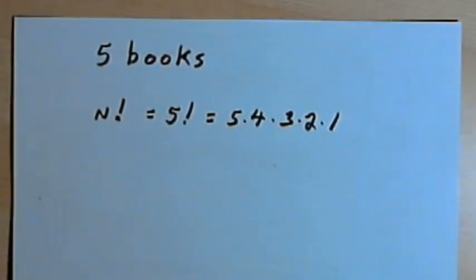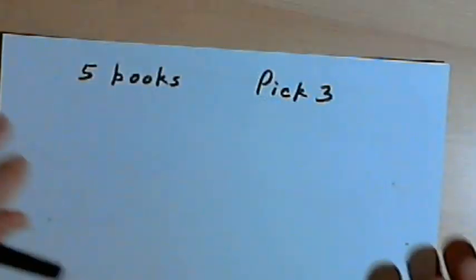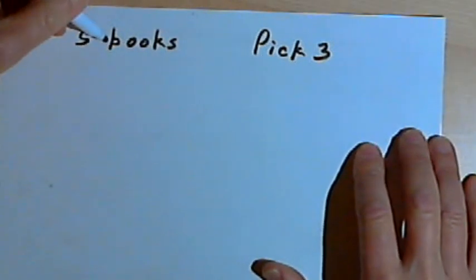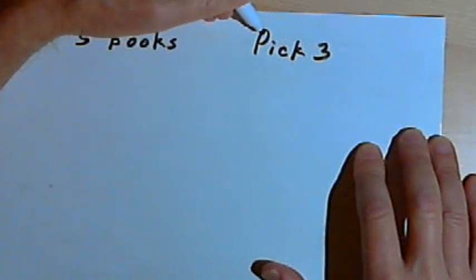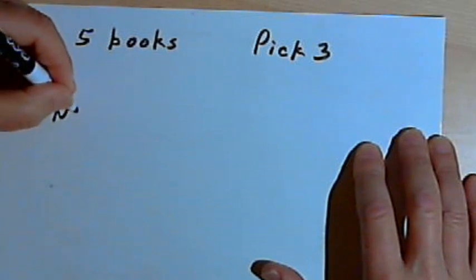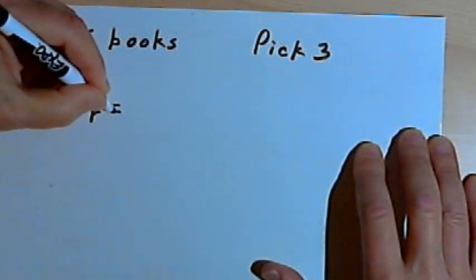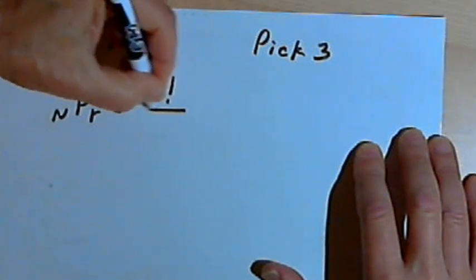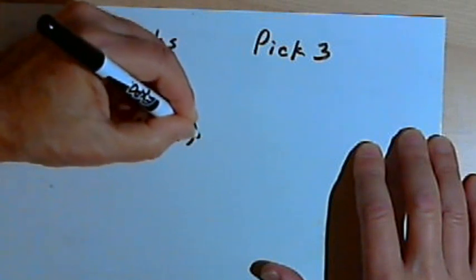Now, you might not want to take all of the objects. So for instance, let's say you only want your five books, but you only want to pick three of them, and you want to know how many three-book arrangements, how many three-book permutations you can make. The formula we use for that is going to be nPr, I'll explain what this means in a second, equals n factorial over n minus r factorial.